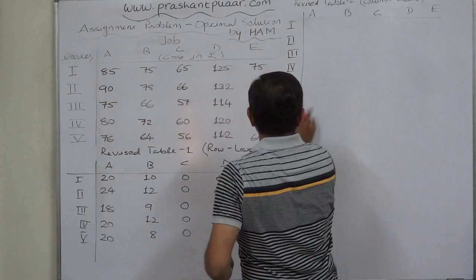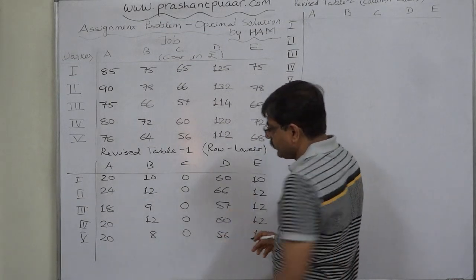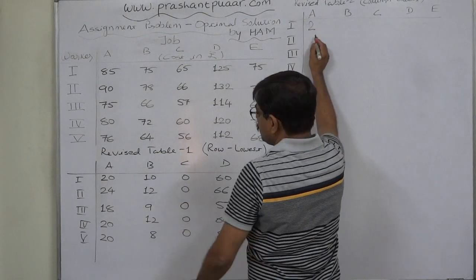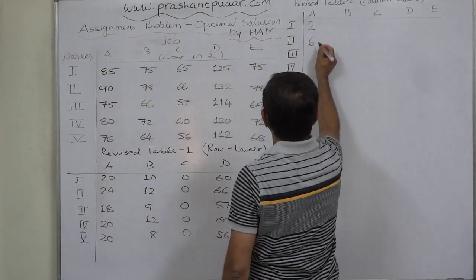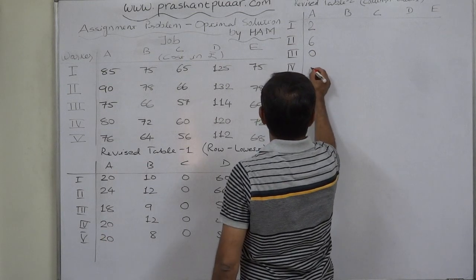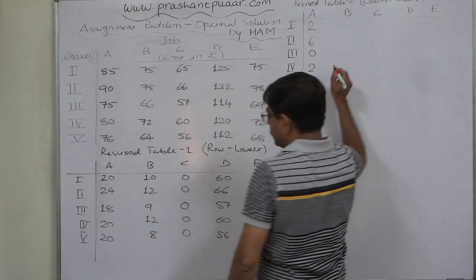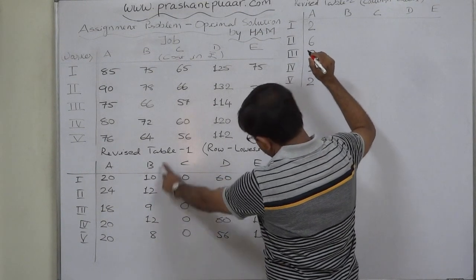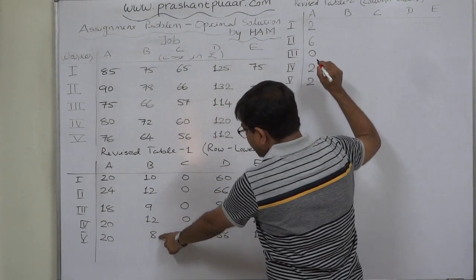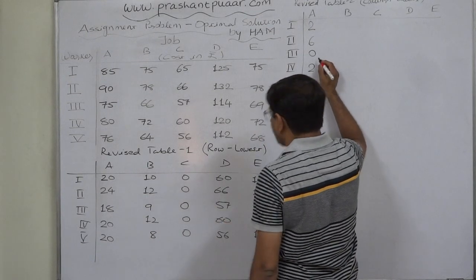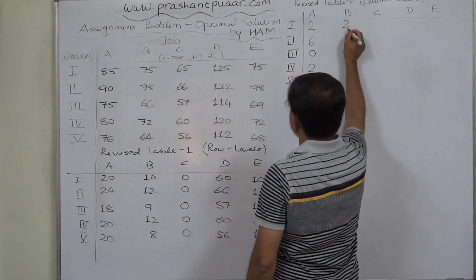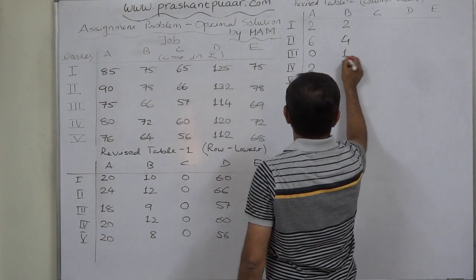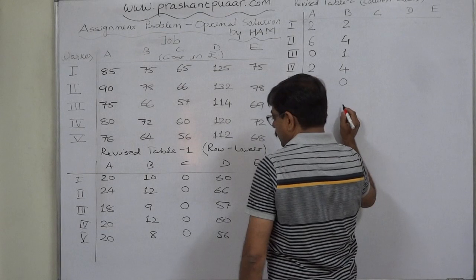In column A, the lowest value is 18. Subtracting 18: 20 minus 18 is 2, 24 minus 18 is 6, 18 minus 18 is 0, and 20 minus 18 is 2. In column B, the lowest value is 8. Subtracting 8: 10 minus 8 is 2, 12 minus 8 is 4, 9 minus 8 is 1, 12 minus 8 is 4, and 8 minus 8 is 0.